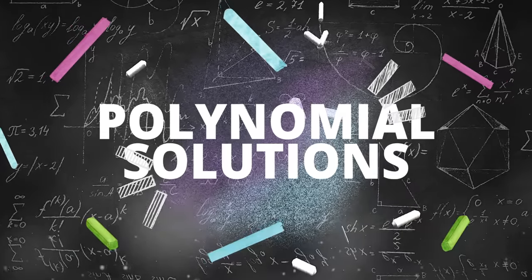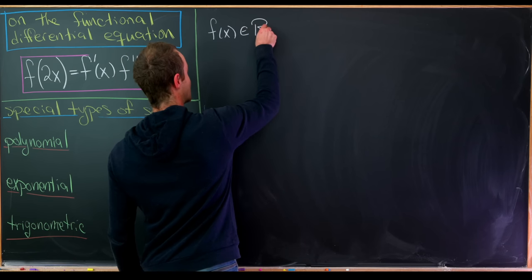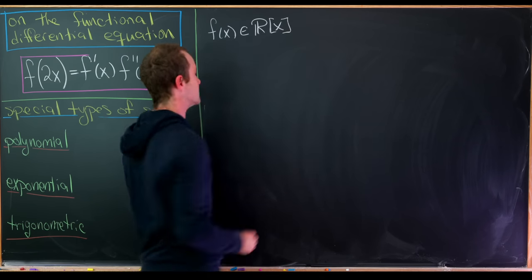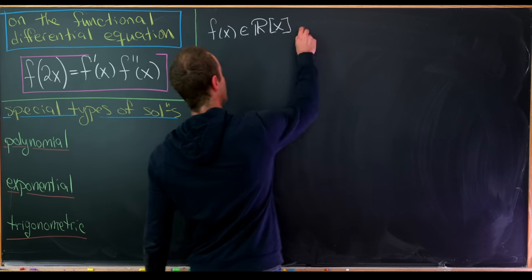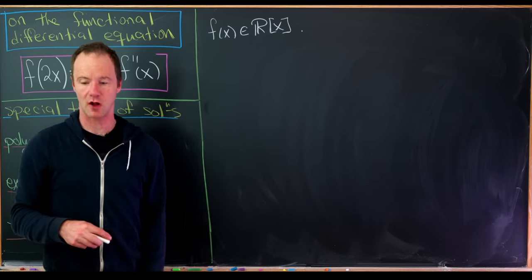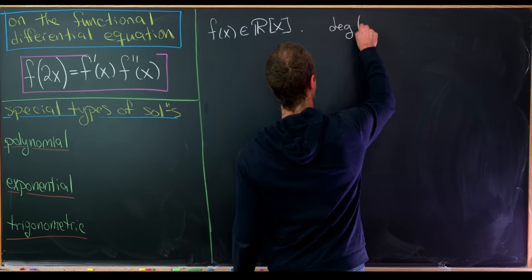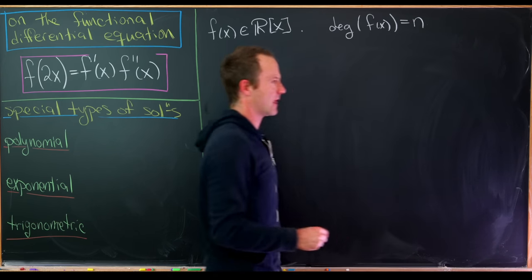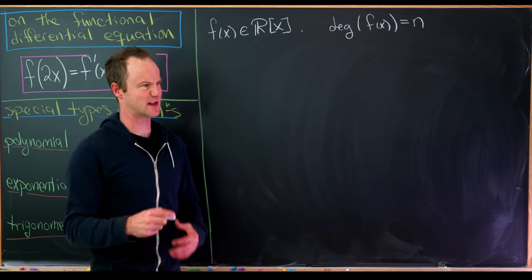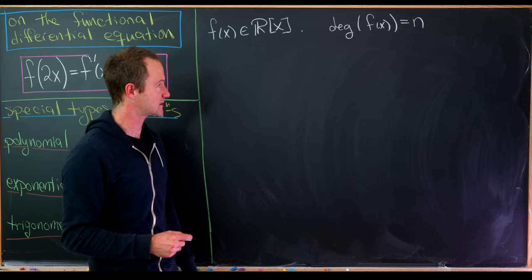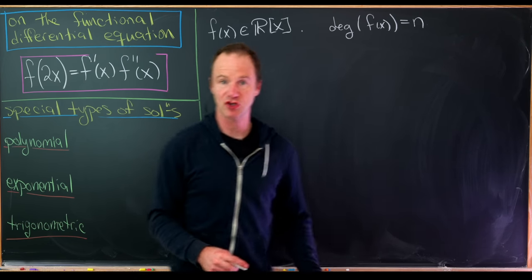Let's start with the polynomial solution. Say that f(x) is a polynomial in ℝ[x] — the space of polynomials with real coefficients. Polynomials have a degree, the largest power of x present, so let's say the degree of f(x) is equal to n. Furthermore, the degree of the product of two polynomials is the sum of the degrees. Applying the degree operator to both sides of the equation should help us out.